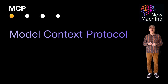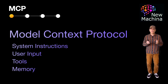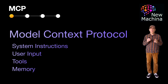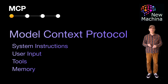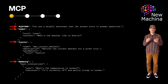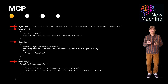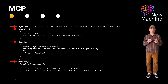Model Context Protocol, or MCP for short, standardizes how context is structured and passed to large language models by organizing inputs into clearly defined sections like system instructions, user input, tools, and memory. It also standardizes how tools are described, invoked, and how their outputs are reintegrated into the next model prompt. This enables consistent, interpretable, interoperable interactions across LLM-based systems.